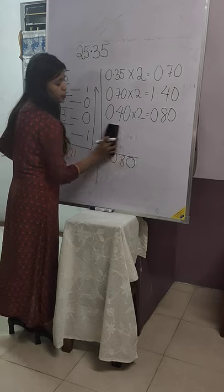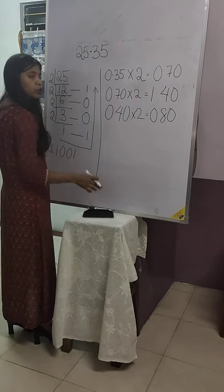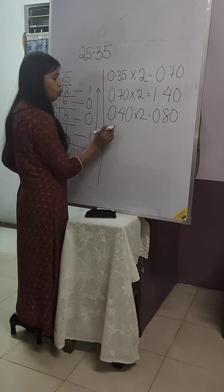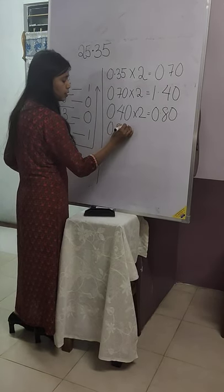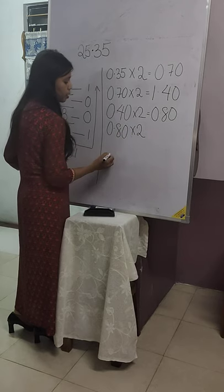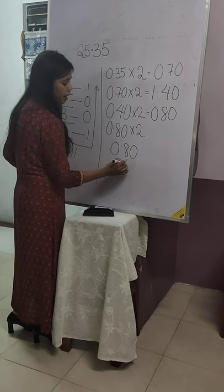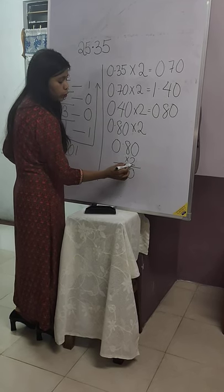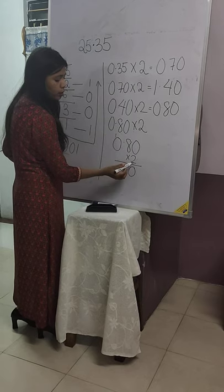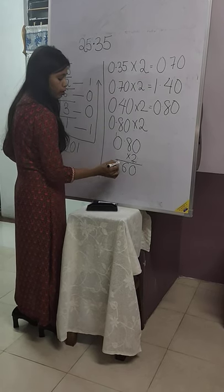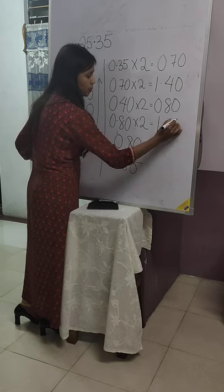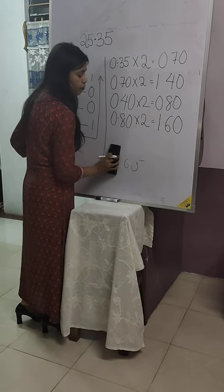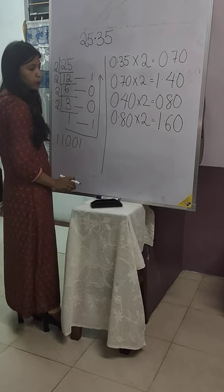Some of the students can stop here but it's always good to at least take 4 decimal places. So one more step. 0.80 into 2. How much will we get? 2 into 0 is 0. 2 into 8 is 16. Carry over 1. 2 into 0 is 1. So we get here 1.60. Now we can stop here because we have the number at least up to 4 decimal places.